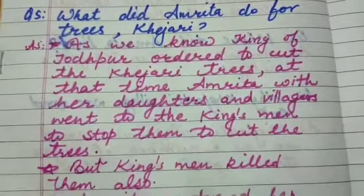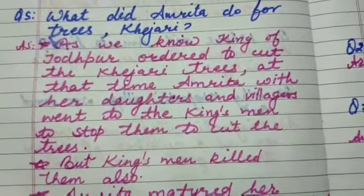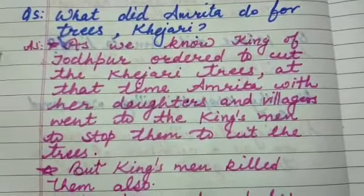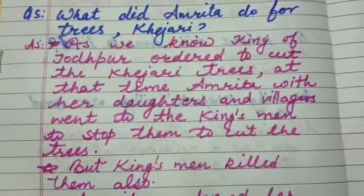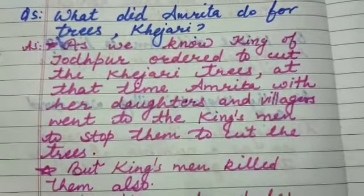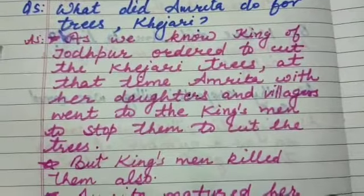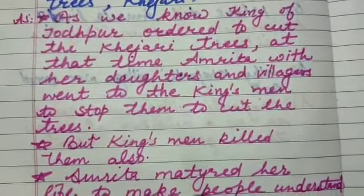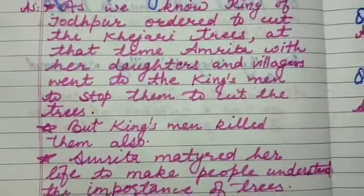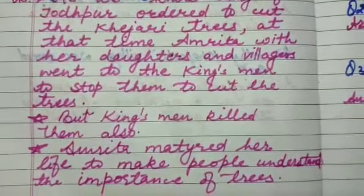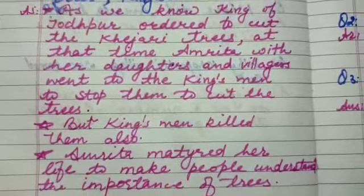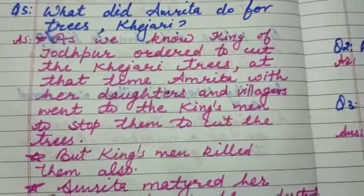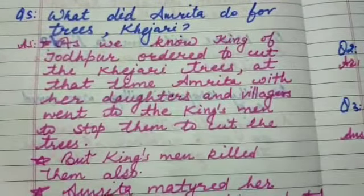Now the next question — you may say this is the five marks question. What did Amrita do for the Khajari trees? Answer: as we know, the king of Jodhpur ordered to cut the Khajari trees. At that time Amrita with her daughters and villagers went to the king's men to stop them from cutting the trees, but king's men killed them also. Amrita martyred her life to make people understand the importance of trees. She wanted to make people understand that trees are very important for us.